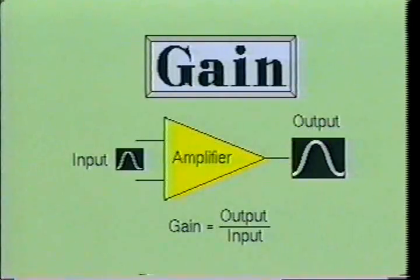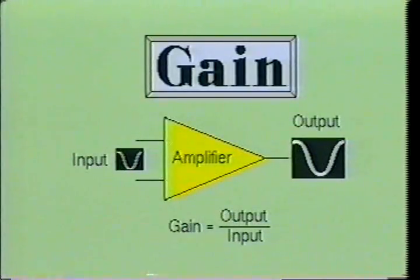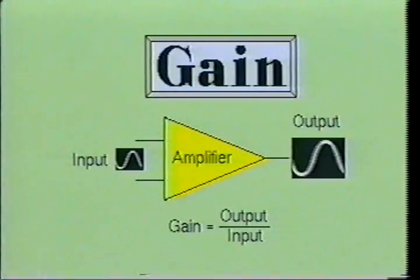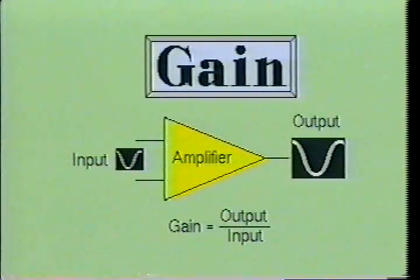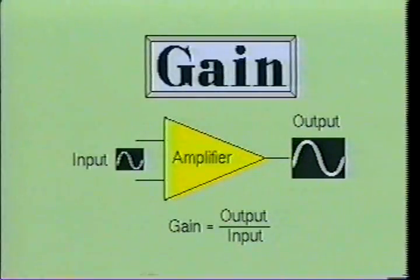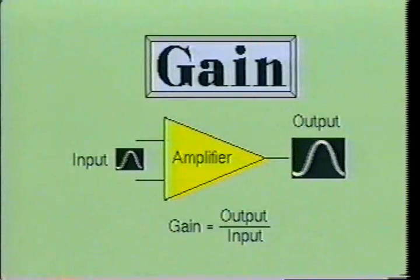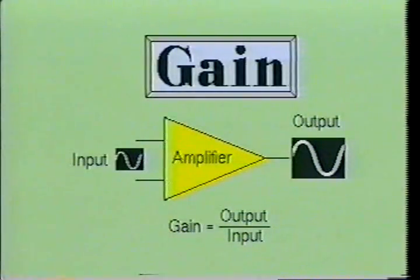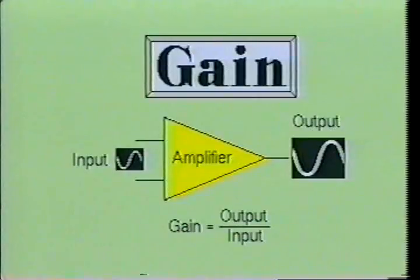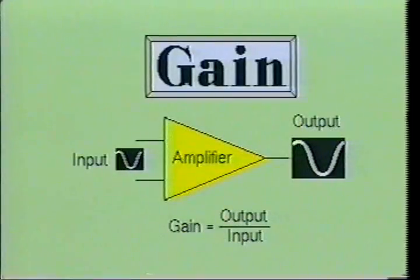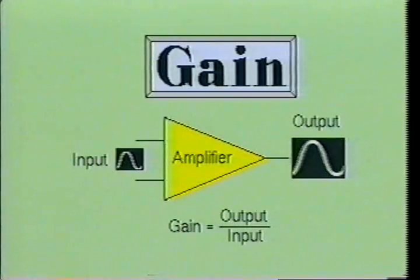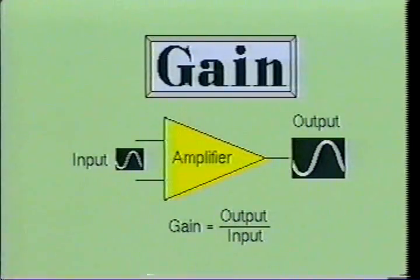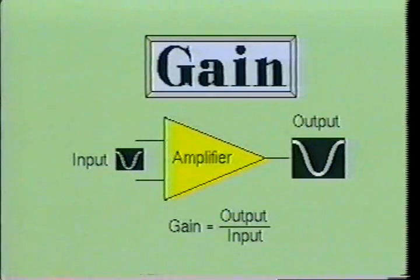The gain of a circuit is a measure of the increase in signal level from the input to the output. Gain may be measured in terms of current, voltage, or power. The unit of measurement for gain is the decibel. In general, gain equals the output divided by the input.